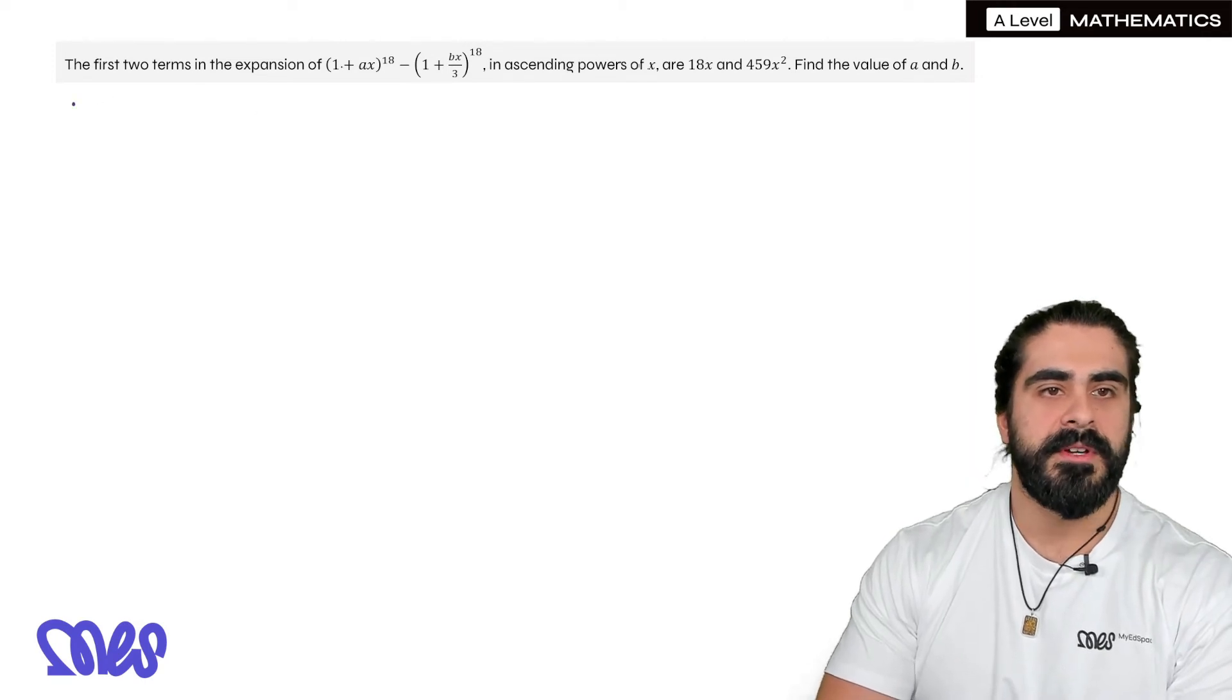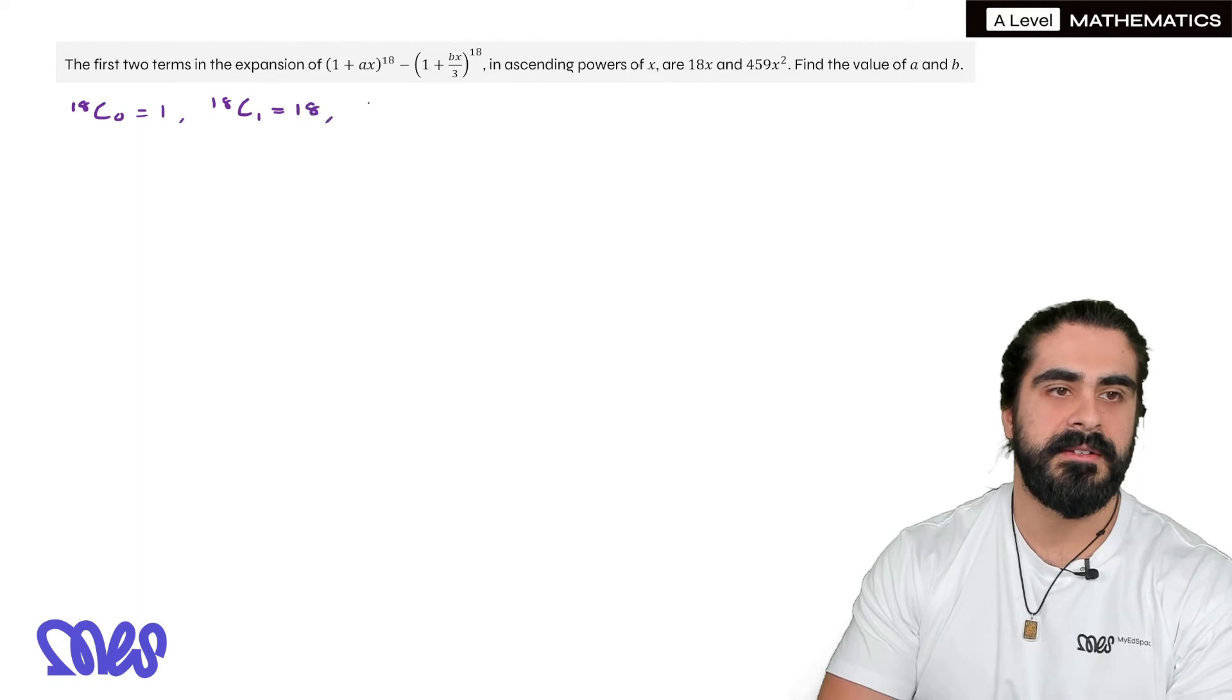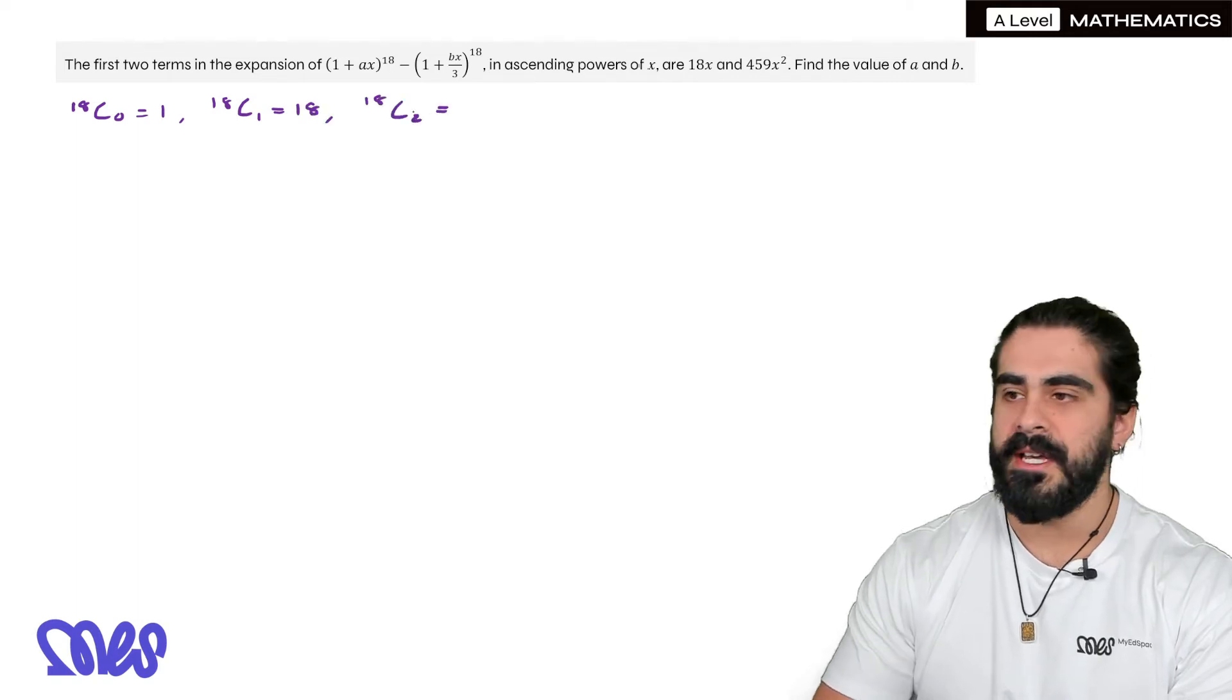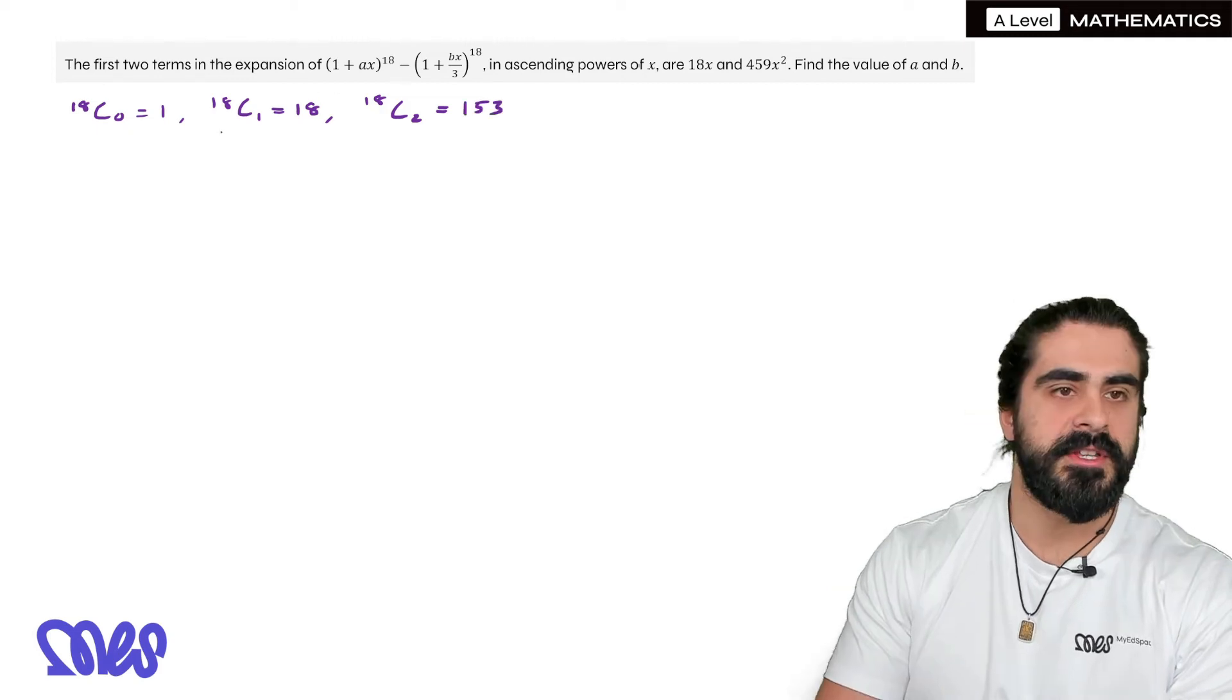So we need to expand both. So because they're both power 18, we write down what those coefficients would be. So 18 choose 0 would be 1, 18 choose 1 would be 18. Then we just need to write down what 18 choose 2 would be. So 153. So we can do the expansion.